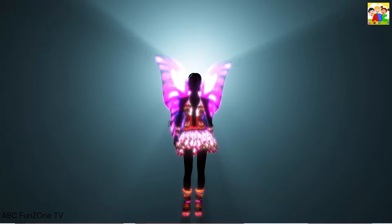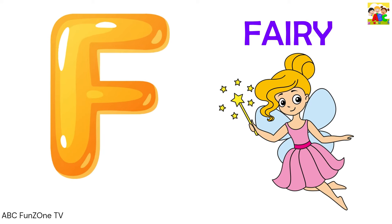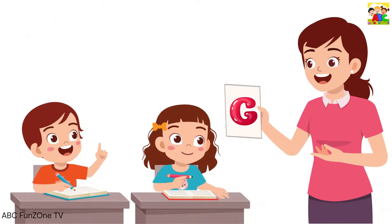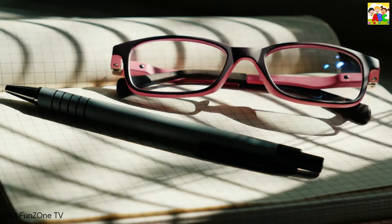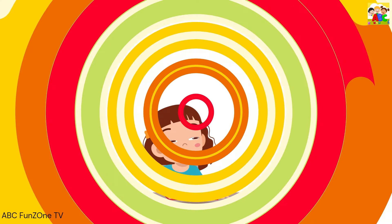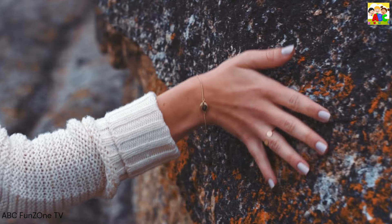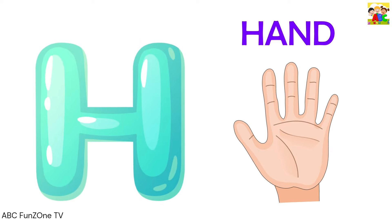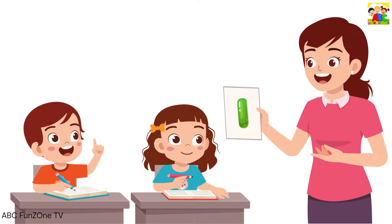D is for Diamond, D-D-Diamond, D-Diamond. E is for Elephant, E-Elephant. F is for Fairy, F-Fairy.